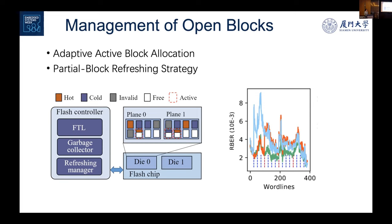We summarize our observations as two points. First, longer open time causes more severe reliability degradation, so our first task is to reduce the open time of flash blocks. Second, open time also increases reliability variations among different layers, so it is more critical to deal with these reliability variations among layers during open time.